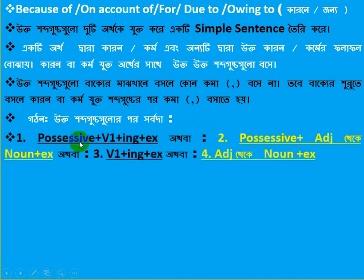Number 1 — Possessive. We look at completing sentences using: because of, on account of, for, due to, and owing to.